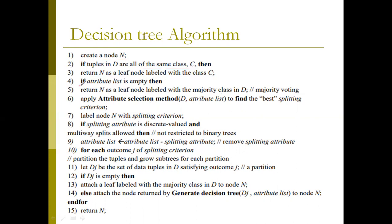The second case: if the attribute list is empty, then return n as a leaf node labeled with the majority class in d.